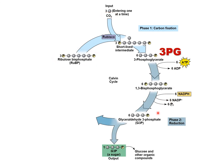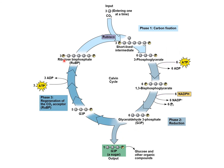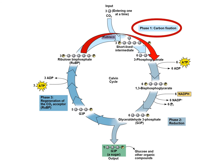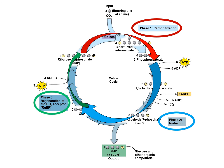We use ATP and NADPH to reduce 3PG, putting all those high-energy electrons in, and we pop off G3P as output. So 3PG goes in, G3P comes out, and what's left over we regenerate back into RuBP using some ATP, so we're ready to add more CO₂ using rubisco again. Carbon fixation is the reaction to know best, then reduction using ATP and NADPH to pop off G3P, and regeneration of RuBP to start the reaction once again.